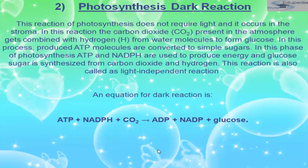Although the light-independent reactions do not use light as a reactant, they require the products of the light-dependent reactions to function. The light-independent molecules depend on energy carrier molecules ATP and NADPH — which were products of the light-dependent reaction but act as reactants in the Calvin cycle — to drive the construction of new carbohydrate molecules. After energy is transferred, the carrier molecules return to the light-dependent reaction to obtain more energized electrons.